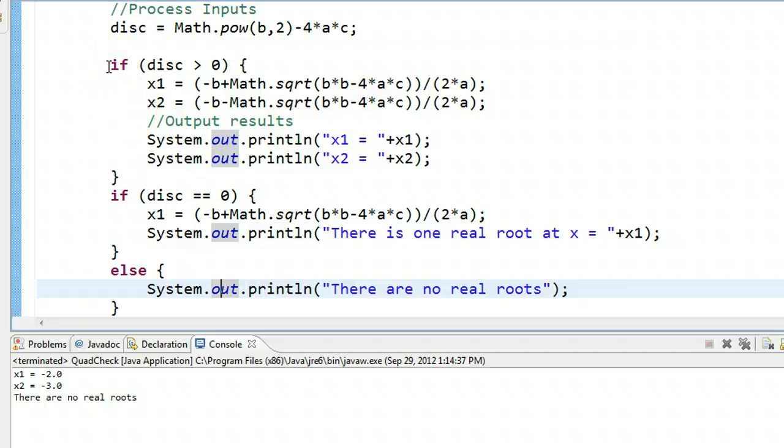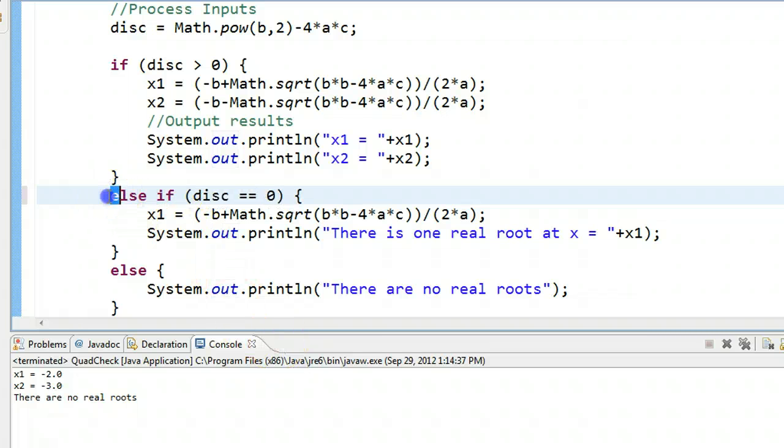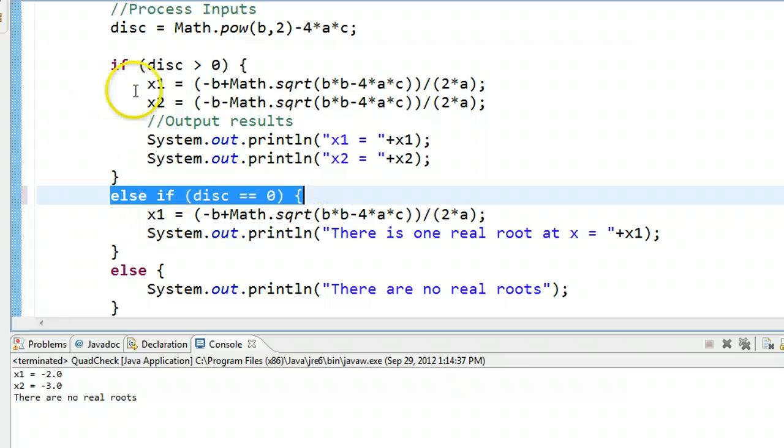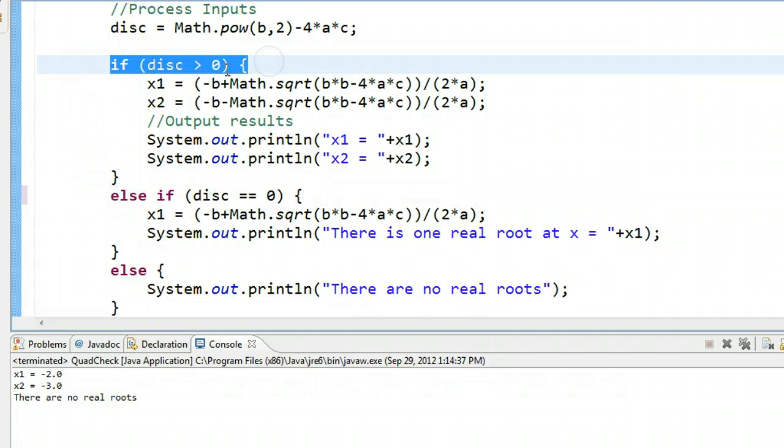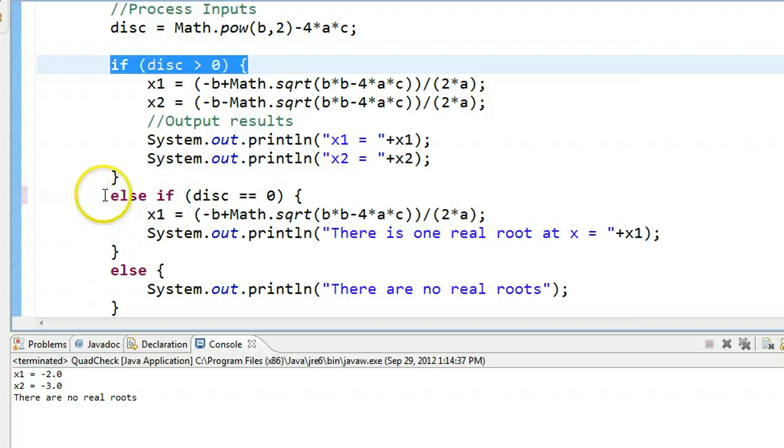And what we use is called an if-else-if structure. Instead of putting if here, I can put the word else-if. And what that does is it ties this if statement to the one above it. So it says if this. So if this fails, it's going to try this. If this fails, it's going to do this.